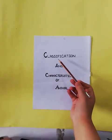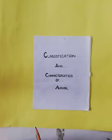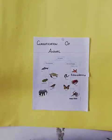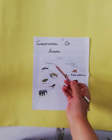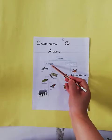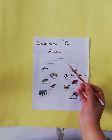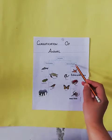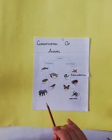In the previous lecture, we studied about the classification and characteristics of animals. We also studied about the three groups of vertebrates. Animals are classified on the basis of the presence or absence of a backbone. So we can classify animals into two main groups: vertebrates and invertebrates. Vertebrates are those animals which have a backbone, and invertebrates are those animals which do not have a backbone.